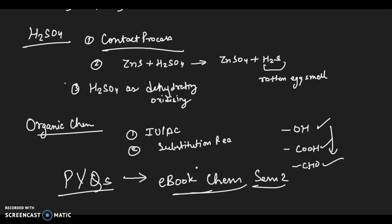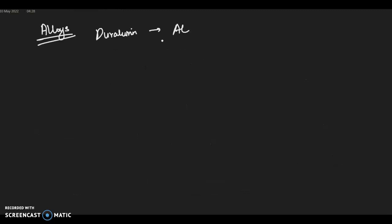The link is in the description box you can buy it and study. Alloys part also: duralumin is an alloy of aluminium, copper, magnesium, and manganese. Aluminium is selected as major component of duralumin alloy because it brings lightness. Duralumin is used in aircraft because of its lightness.